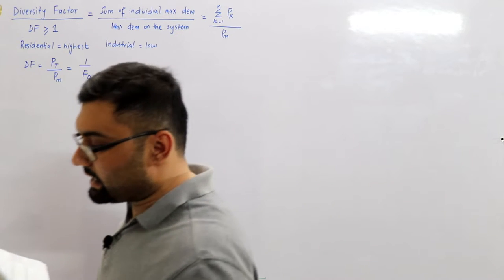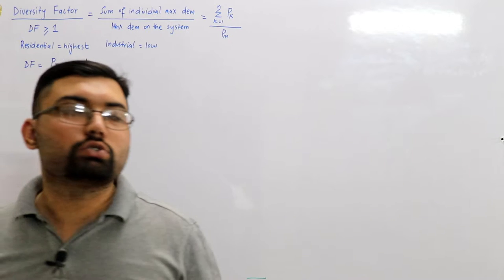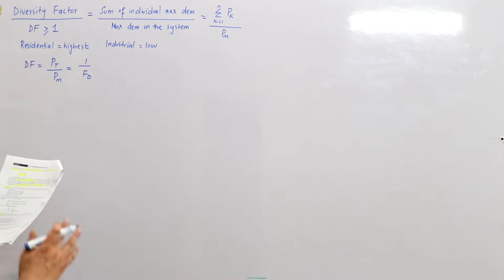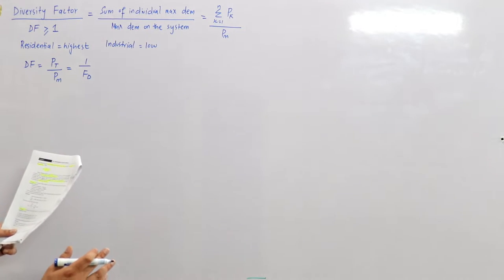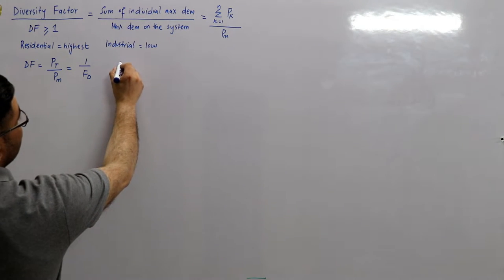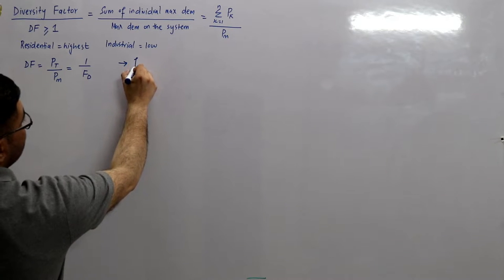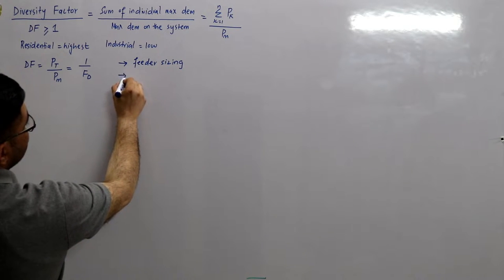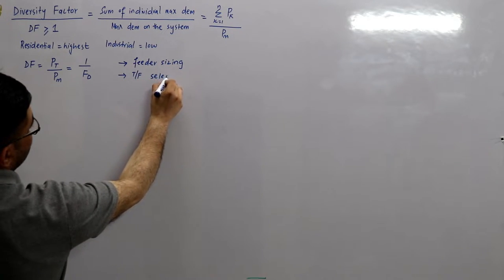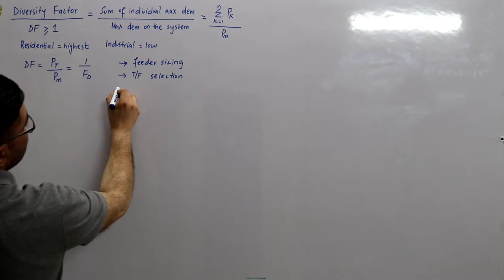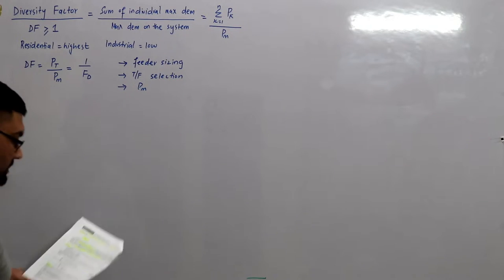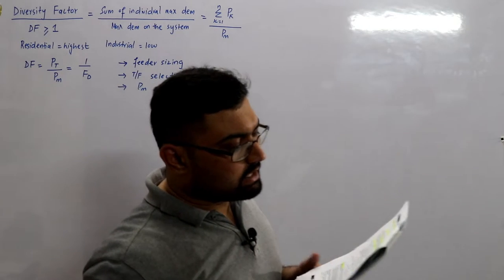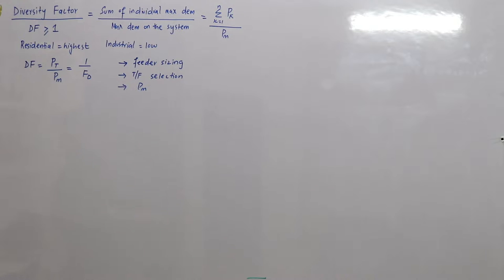This is mostly used for distribution transformer sizing, feeder sizing, and maximum demand calculations. We will start with simpler examples in this video and then move on to more complex ones in the next video.